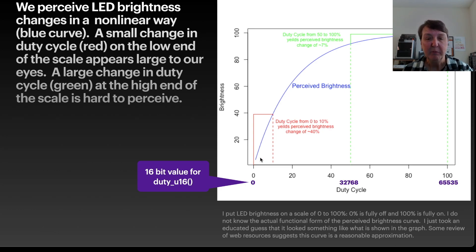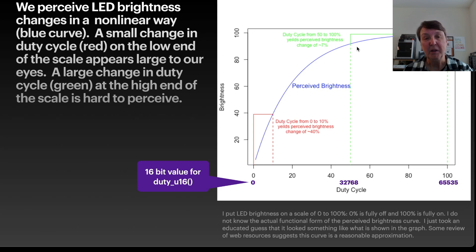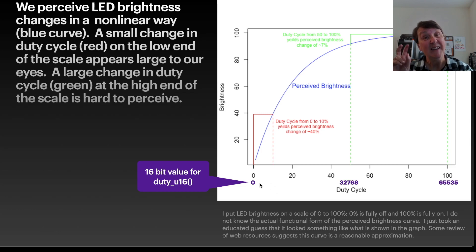At these early duty cycles, a very small change yields a pretty large change to our eyes, and then at the high end, even a large change in duty cycle is pretty hard to perceive. That gives us a nonlinear curve for perceived brightness, so we're going to have to do something nonlinear with this scale to linearize it for our eyes.